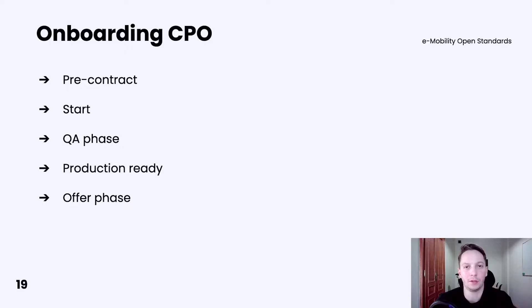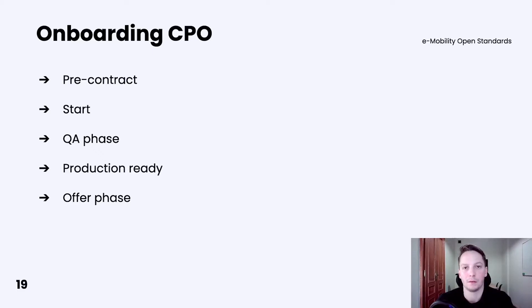Then you will need to create a production environment and perform final tests with Hubject. That is a mandatory step before starting integration with the Hubject platform. The last phase is the offer phase. As a CPO, you may create an offer for other EMPs with detailed service specification and pricing.